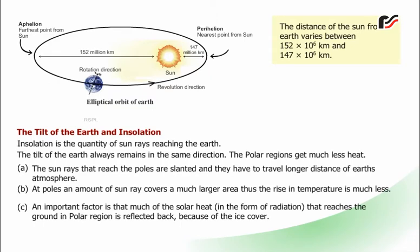The Sun rays that reach the poles are slanted and have to travel a longer distance through the Earth's atmosphere. At the poles, the same amount of Sun rays covers a much larger area, so the rise in temperature is much less. An important factor is that much of the solar heat in the form of radiation that reaches the ground in polar regions is reflected back because of the ice cover.